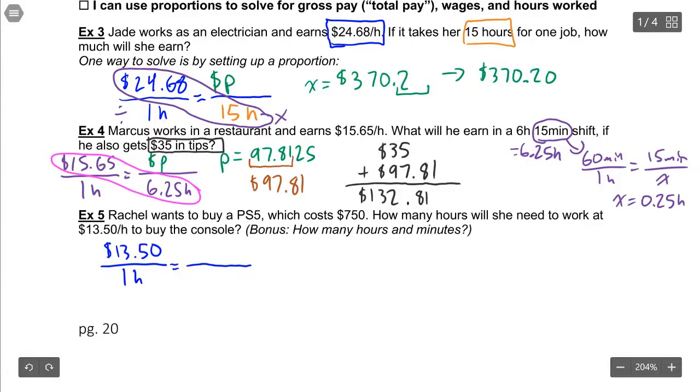Except instead of our hours being what we know, in this case we know the money that we want to get, so the $750 goes up top and the hours are unknown. Once you set up your proportion, all you need to do is cross multiply and divide the other way: 750 times 1 divided by 13.5. You plug into your calculator and you get x is 55.55 repeating hours.